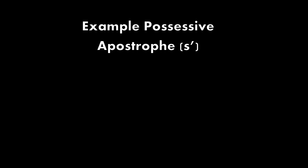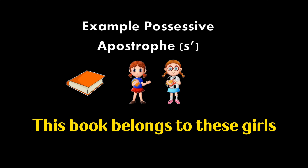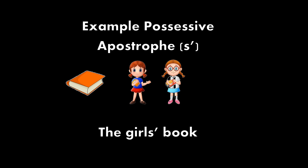Now let's try an example for S apostrophe. Say there isn't only one girl — say there are two girls and a book. Usually we're going to say this book belongs to these girls. But today we're going to learn S apostrophe. So what are we going to say? We're going to say the girls' book.